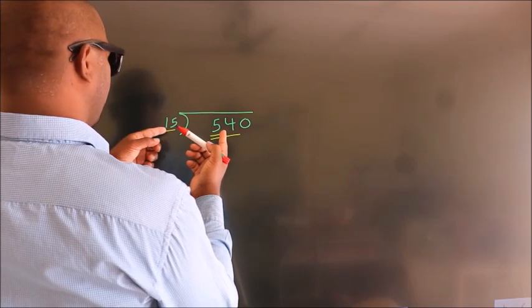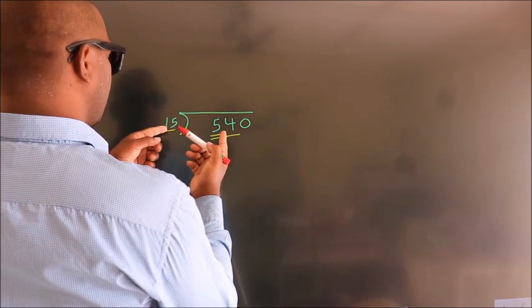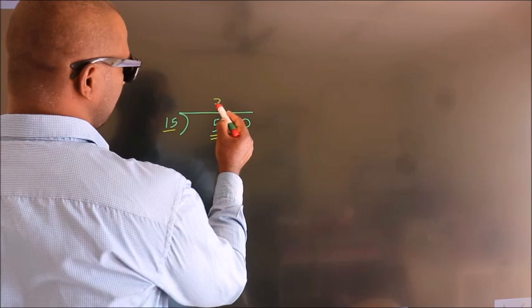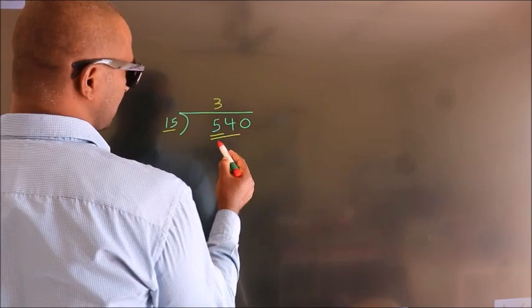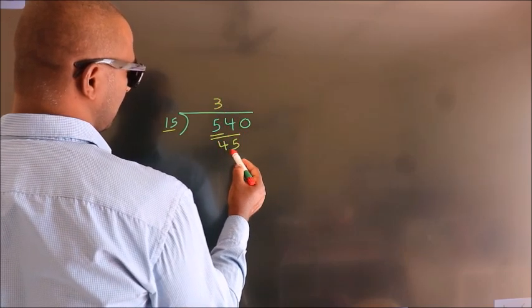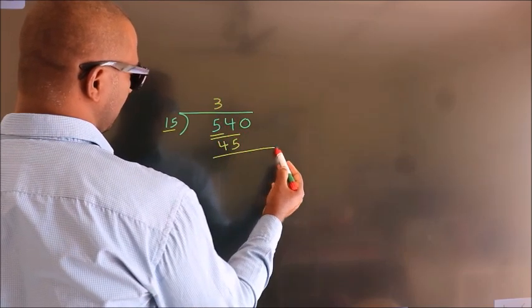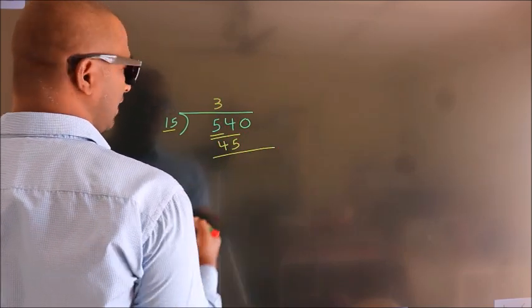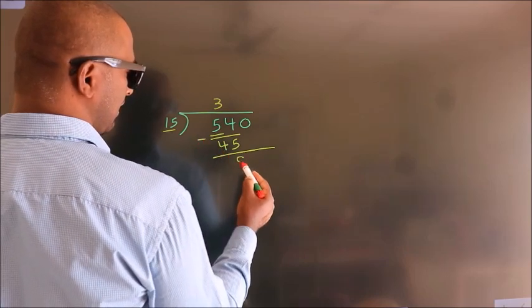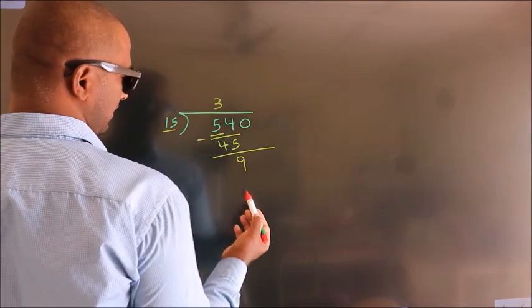In the 15 table, 15 threes is 45. Now we should subtract. We get 9.